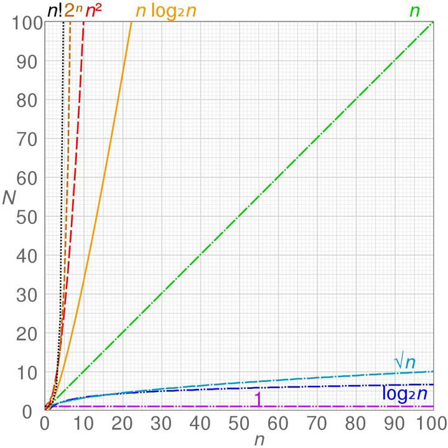Quasi-polynomial time algorithms are algorithms that run slower than polynomial time, yet not so slow as to be exponential time. The worst-case running time of a quasi-polynomial time algorithm is 2^(O((log n)^c)) for some fixed c > 0. For c = 1 we get a polynomial time algorithm; for c > 1 we get a sub-linear time algorithm.